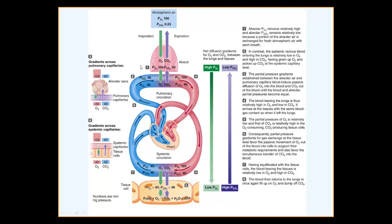As the capillaries exit the alveolar area, the partial pressure of oxygen in the arterial blood is now approximately 100–105 mmHg because oxygen moved from the higher gradient to the lower, and the partial pressure of carbon dioxide dropped from 46 to 40 mmHg. That is your arterial blood.